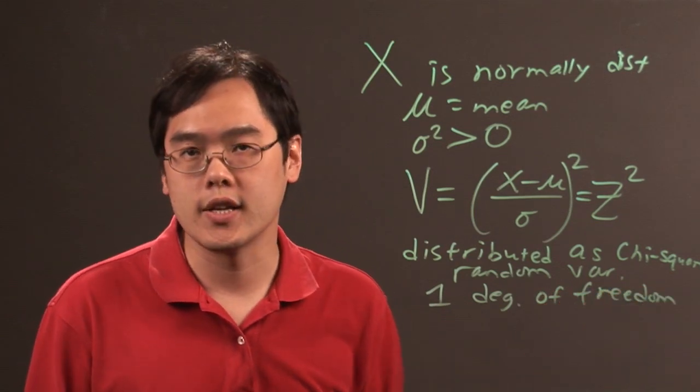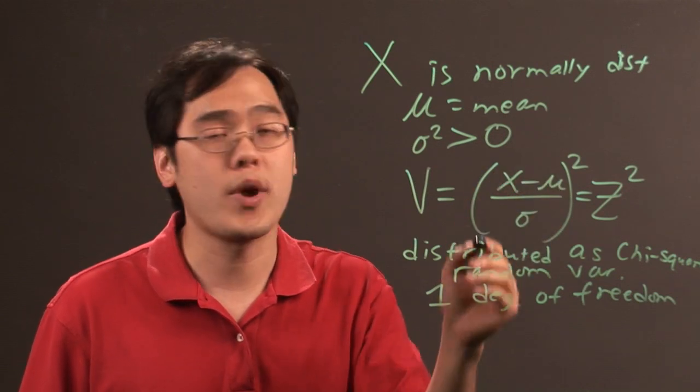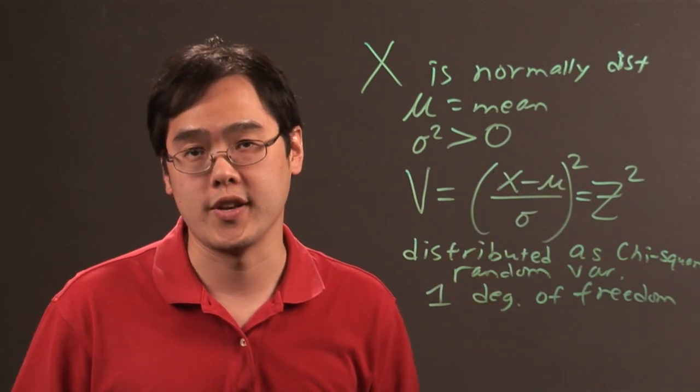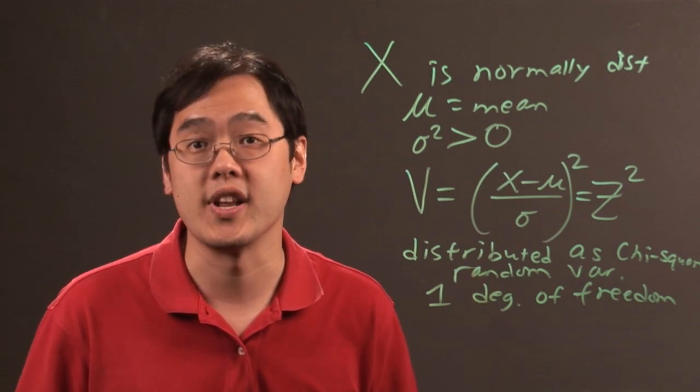So in other words, in this case under these conditions, the normal distribution, the normal random variable can be expressed as a chi-squared random variable with one degree of freedom. In other words, it fits the criteria for chi-squared in this particular case.